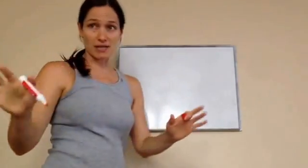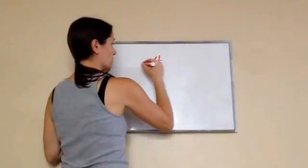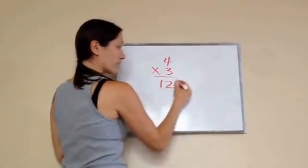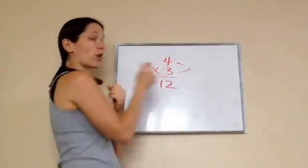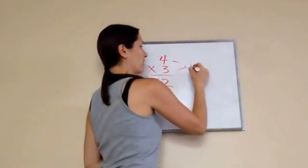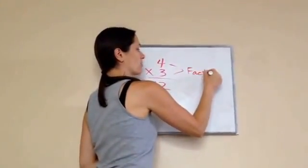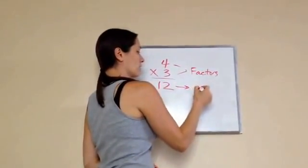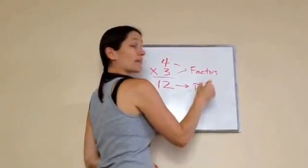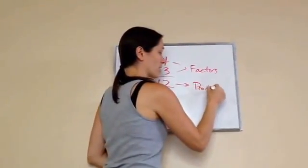Let's take an easy problem again at first. 4 times 3 equals 12. Do you remember what these two are called? The factor. Yes. Do you remember what the answer is called? Sum? No, that's for adding. Product. That's a product, very good.